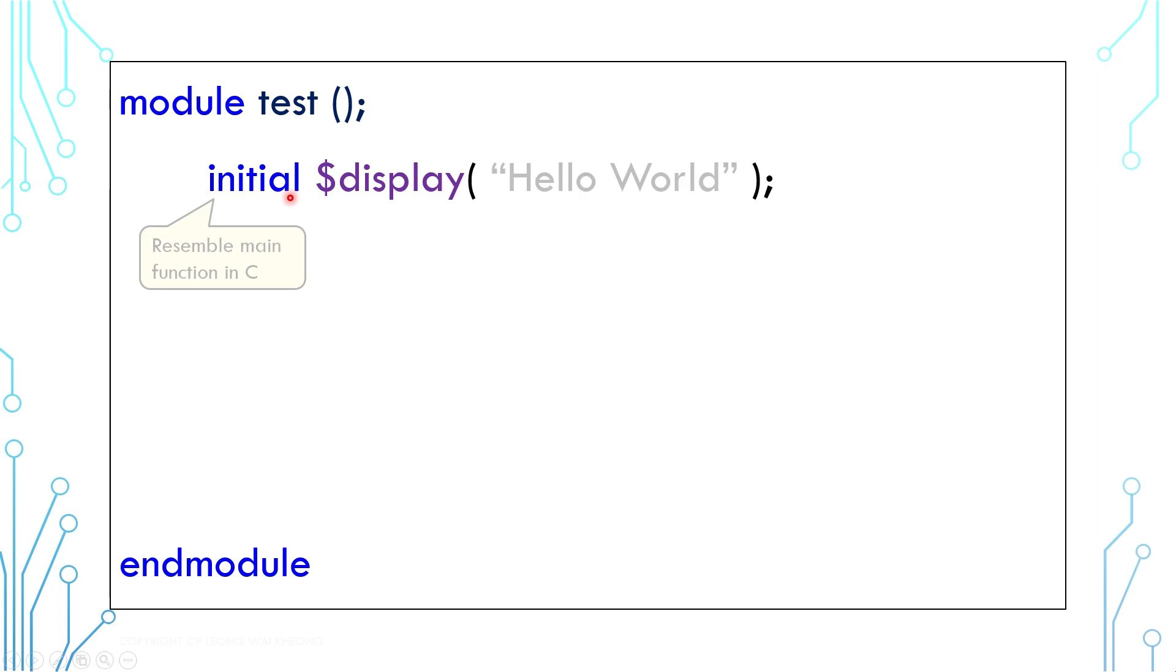And now let's get started. First, you need to create a module. A module is a representation of a block, traditionally a design block. Test is a name provided for the block. The bracket here can contain input and output ports, but since this is a testing block, it does not contain any port. Initial is a syntax where a code starts executing. It is like the main function in C programming.